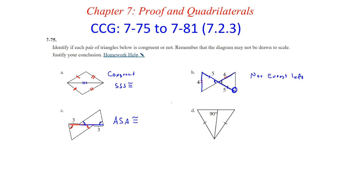On part D, we have a 90-degree angle. It doesn't really look like it, but it says 90, so we'll go with it. Because it is a straight angle, the other side is also 90 degrees. We have the hypotenuse of both triangles congruent. With a right triangle we don't need as much information — we can prove congruency by hypotenuse-leg. The leg they share in common gives us hypotenuse and leg, so they are congruent.